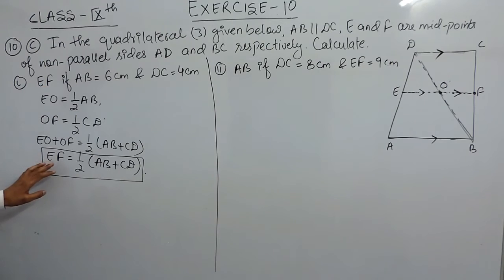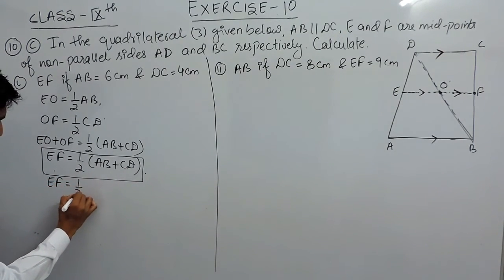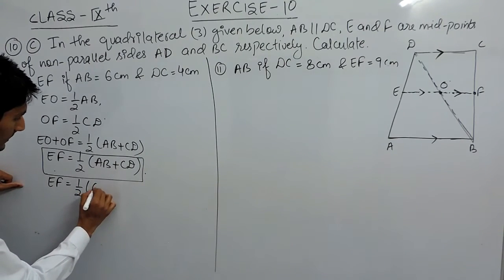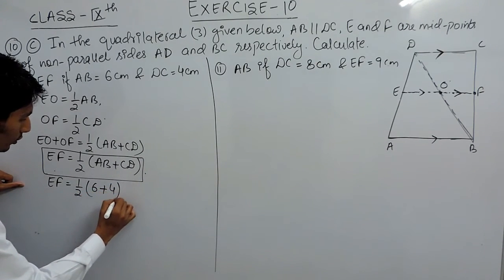Here you have to find EF if AB and DC are given to you. You can find EF if you substitute the value of AB which is 6 and CD which is 4.